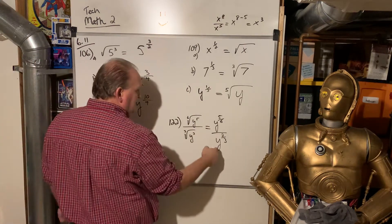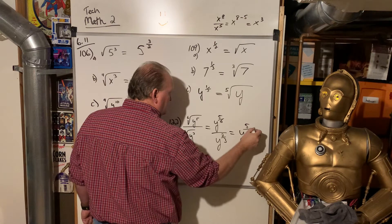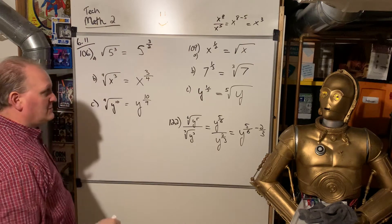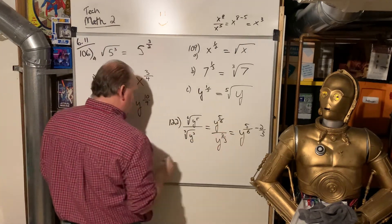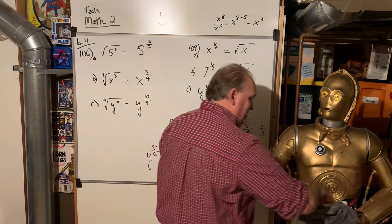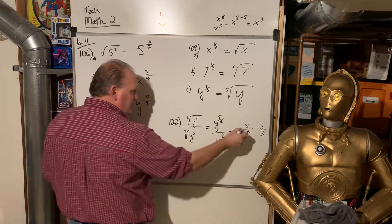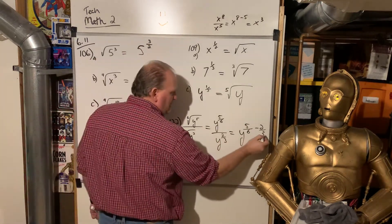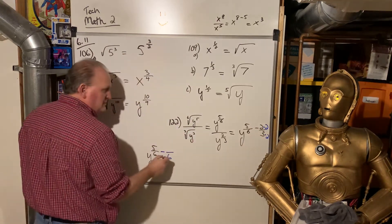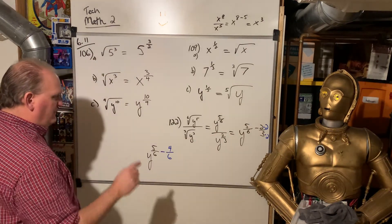So when you have like bases, and you're dividing, then you subtract the exponents. So I have like bases, and I am dividing, so I'm going to subtract these exponents, only it's a little more complicated than that one, because that was just 8 minus 5, which you could do in your head as 3. This is 5 sixths minus 2 thirds. So now we're subtracting fractions, and remember, you have to find a common denominator, which in this case is 6.